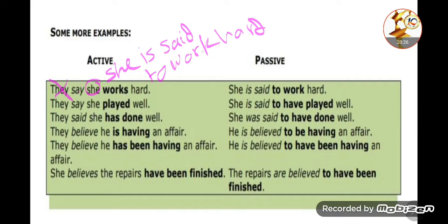Notice what we did: the verb in the second sentence becomes 'to infinitive'. Now: 'They say she played well.' She is said to have played well.' We use 'to have' because 'played' is past — when the verb is in the past, we use 'have + verb three'. Similarly, 'They said she has done well' becomes 'she is said to have done well.'